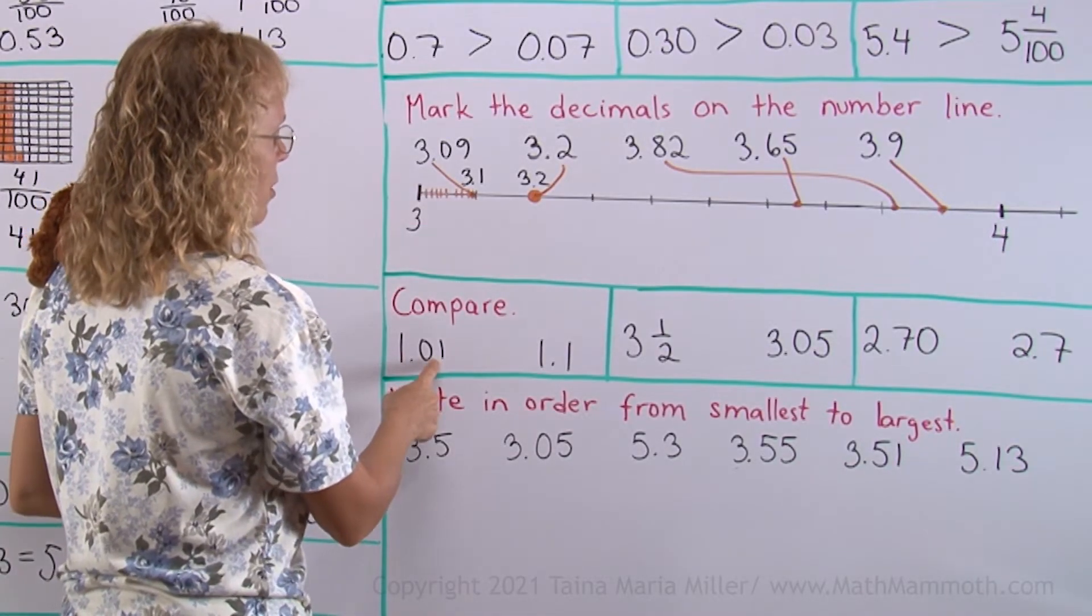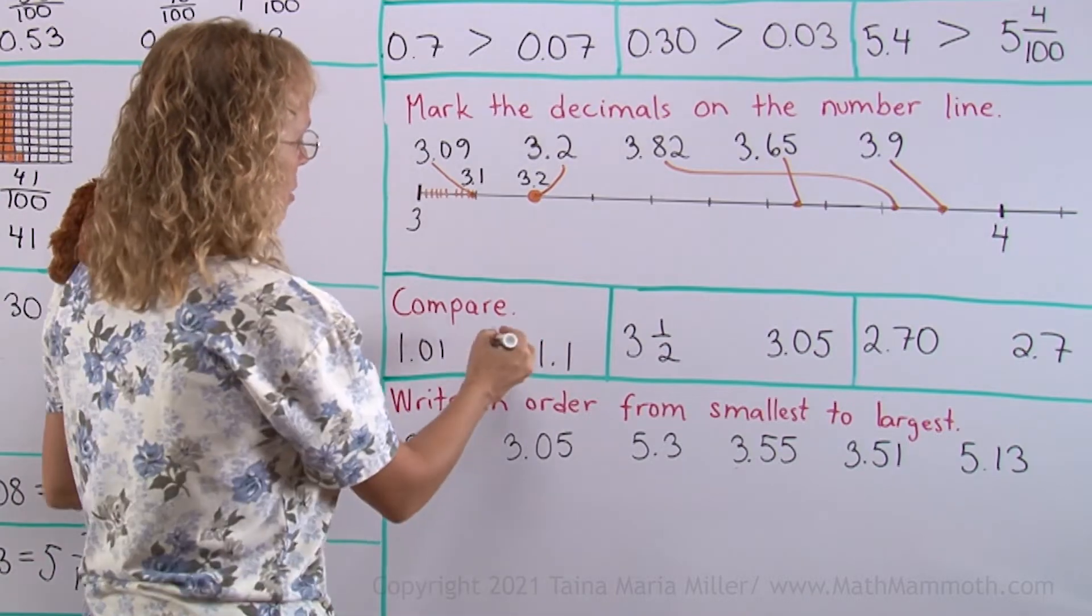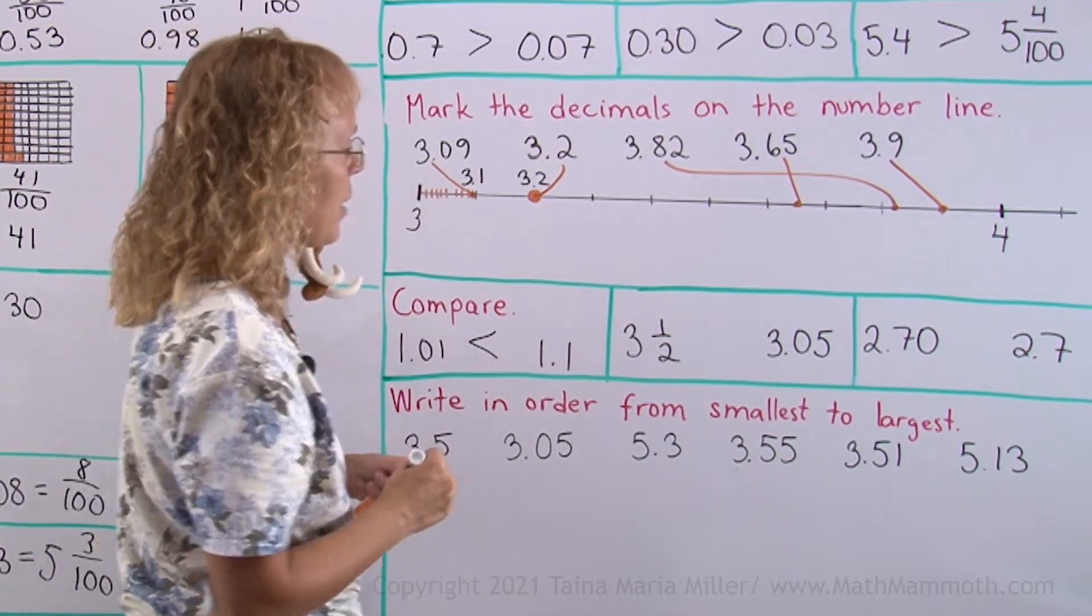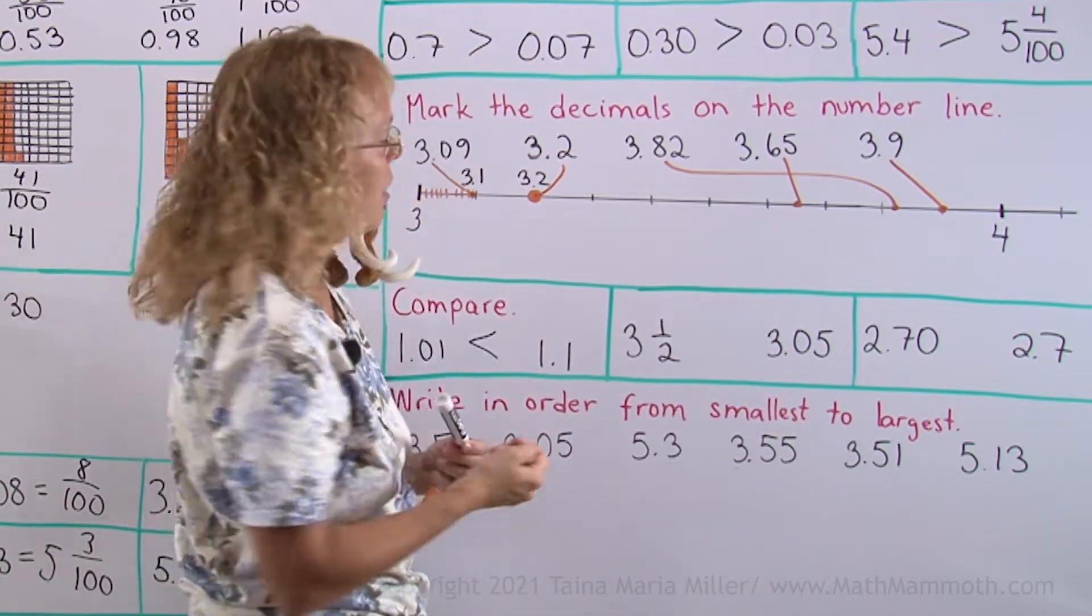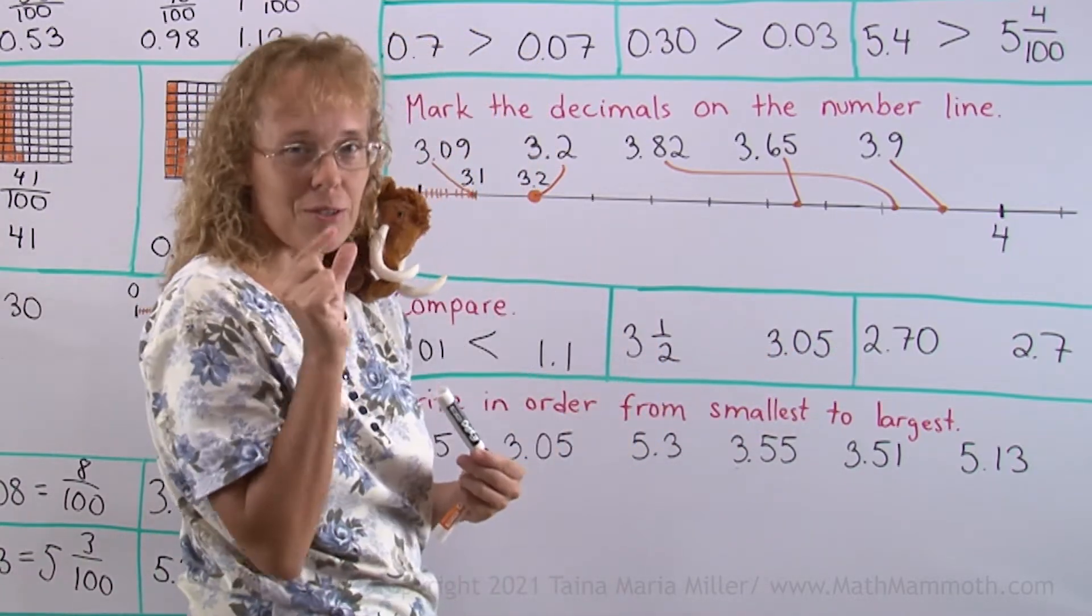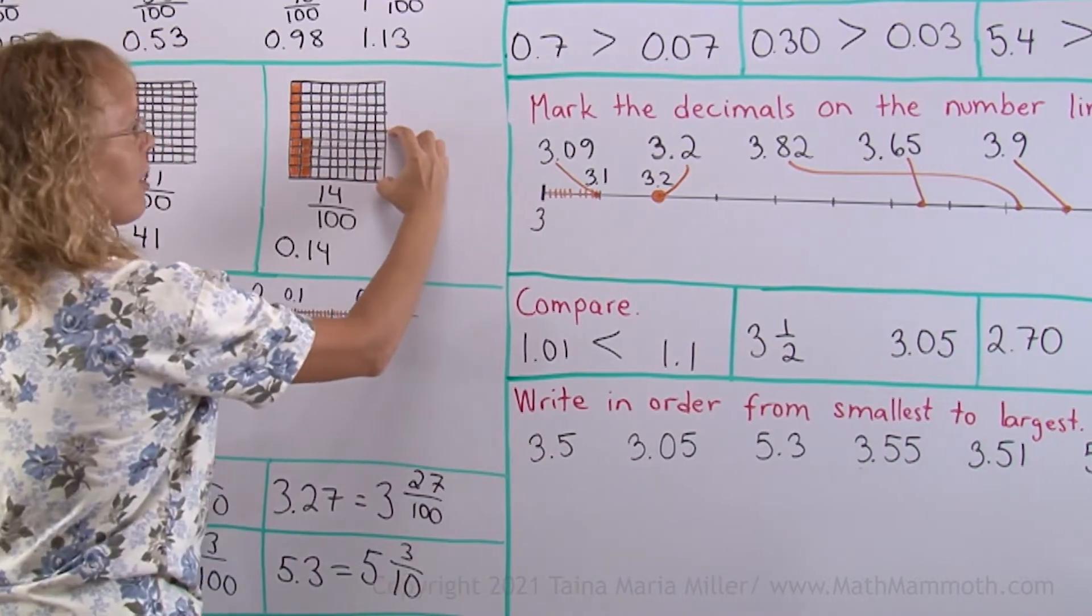You have 1 and 1 hundredth, 1 and 1 tenths. 1 and 1 tenths is more. 3 and a half, 3 and 5 hundredths. 3 and a half is way more than 5 hundredths. Imagine 5 little hundredths from here.